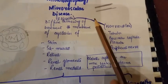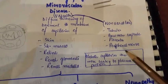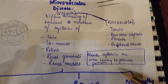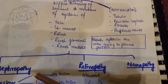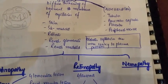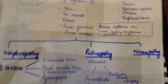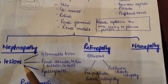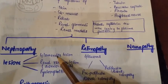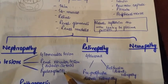Due to diffuse thickening, the diabetic capillaries become more leaky to plasma proteins, resulting in nephropathy, retinopathy, and neuropathy. In nephropathy, three types of lesions take place: glomerular lesions, renal vascular lesions, and pyelonephritis.